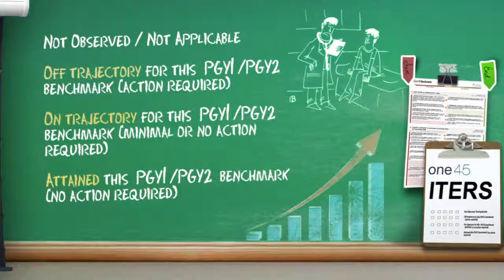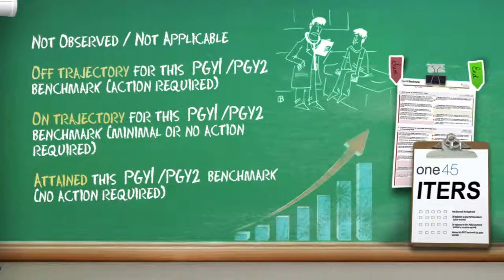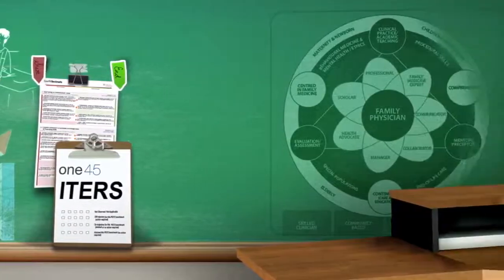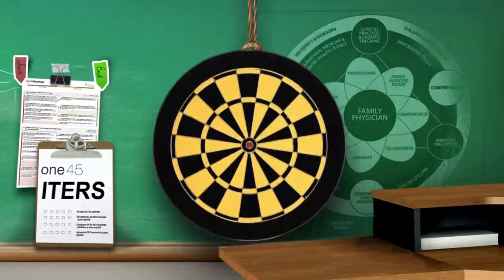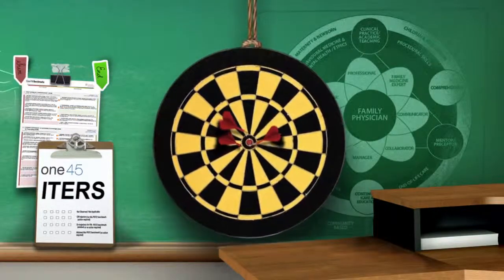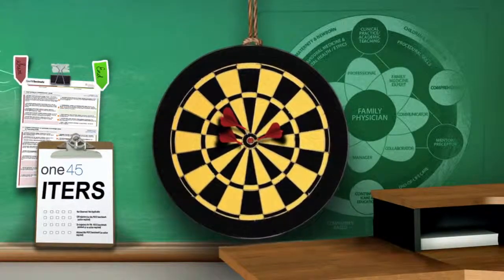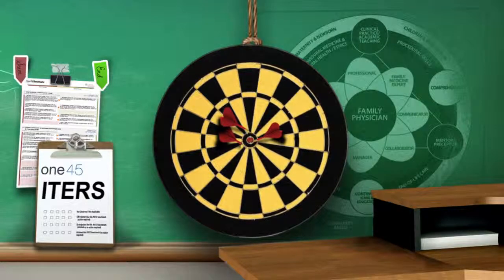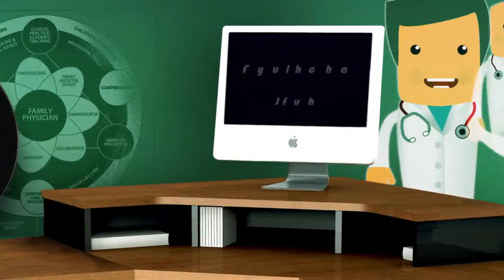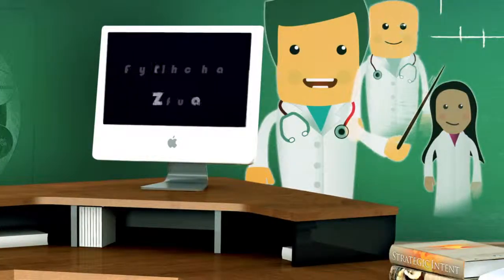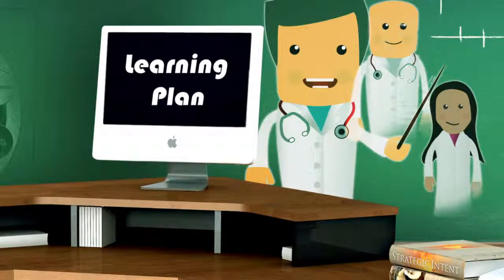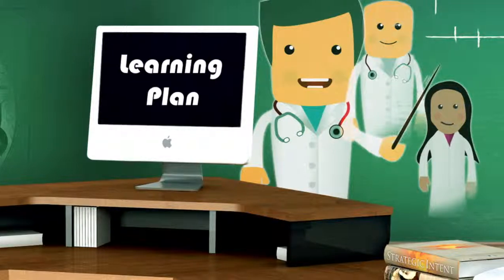On the form is a series of agreed-upon benchmarks that residents attain by the end of each training period. The preceptor must determine if the resident is on trajectory to attain each benchmark by the end of the year or not. If not, how significant is the degree of deviation from the trajectory, and is a learning plan necessary? A learning plan may be developed subsequently by a preceptor-learner pair or collaboratively with a team of educators.